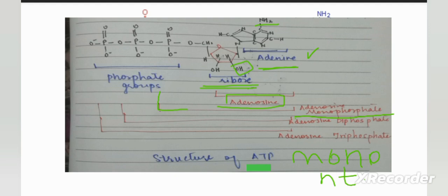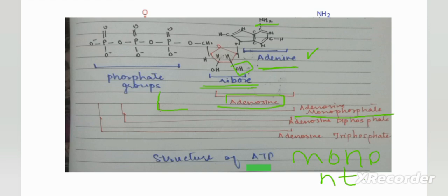ATP is an energy molecule. Energy is released during the respiration process by oxidation, also known as oxidative phosphorylation. Most of the ATP in the cell is made in the mitochondria.